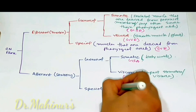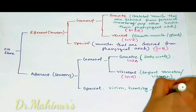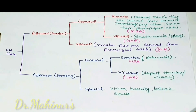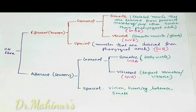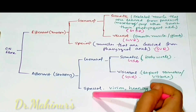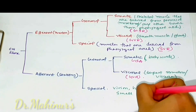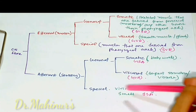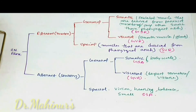When the afferent component is special, the special sensations are vision, hearing, balance, smell, and taste. Vision, hearing, and balance have the functional component special somatic afferent. Smell and taste have a different functional component — special visceral afferent.